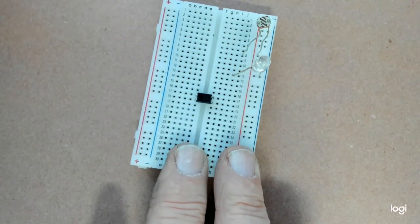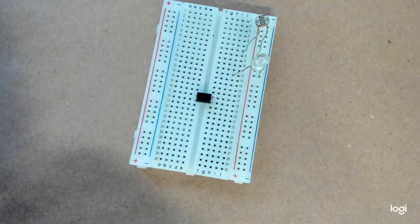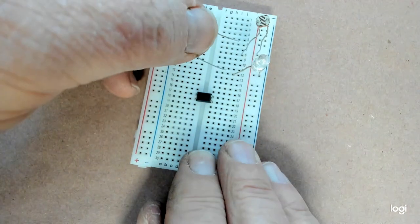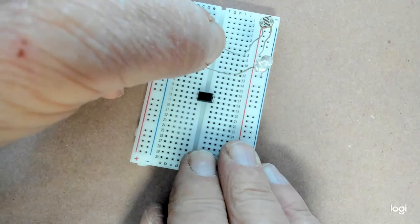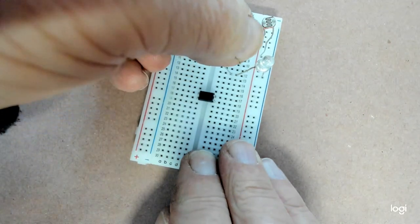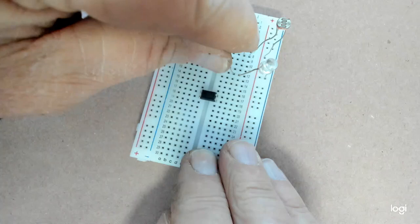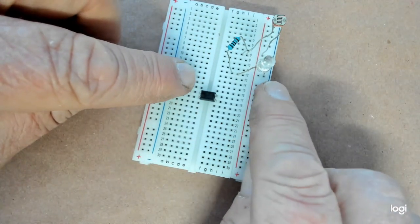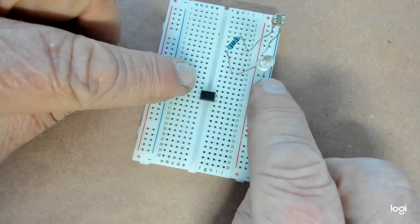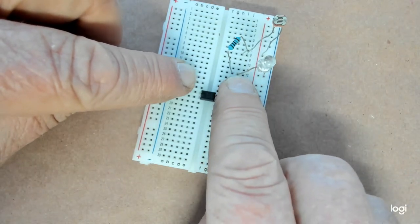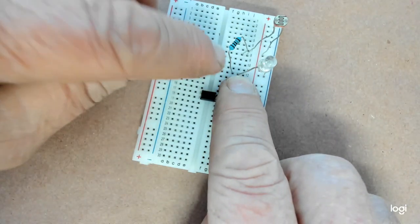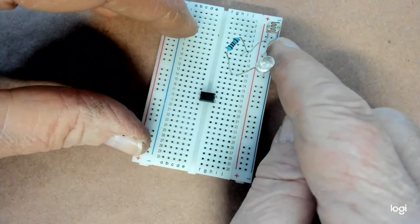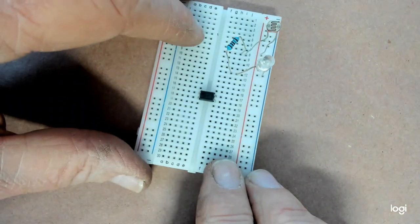Now, I'm going to put a current limiting 100 ohm, well, this one's actually 180 ohm resistor from the anode to the photo cell that's on the breadboard there. Okay, so we've got a completed circuit here. We're going from negative over to the anode through the resistor, and then back over to the positive rail.